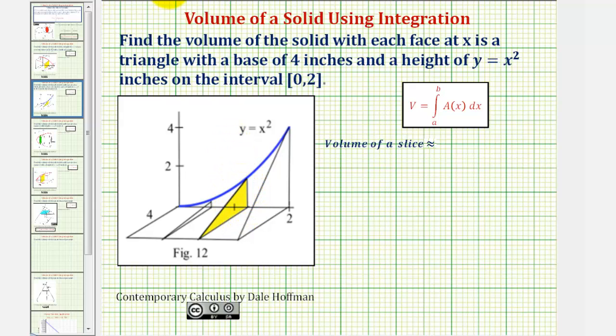Notice how the face is a triangle, where the area of a triangle equals one-half base times height. So to find the volume, we'll first find the area of the face, which would be one-half times the base, which has a length of four units, or in this case four inches.